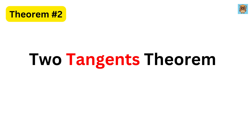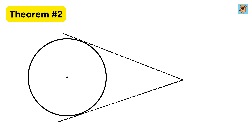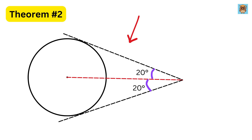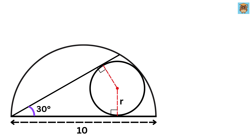The second theorem is the two tangents theorem. If two tangents are drawn to a circle from a single external point, they will always be equal in length. Another important property is that the line joining the external point to the center of the circle always bisects the angle formed between the two tangents. So if the full angle is 40 degrees, both halves will be 20 degrees, and if one tangent length is 5 units, the other will also be 5 units. For our case, drawing a line from the corner of the semicircle to the center of this circle bisects the 30-degree angle, so both angles equal 15 degrees.